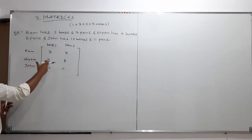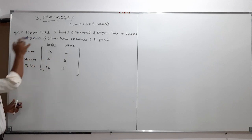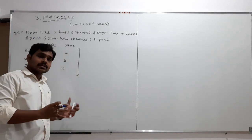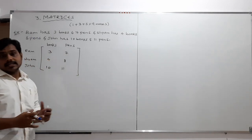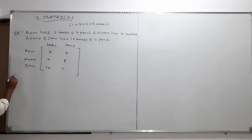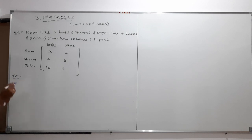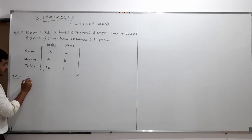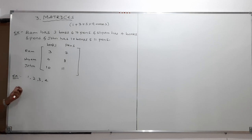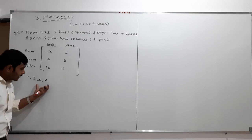The given information is written within the bracket in some arrangement. The arrangement we did here we can call it as matrices. For another example, if I have some numbers — 1, 2, 3, 4 — I took these 4 numbers.